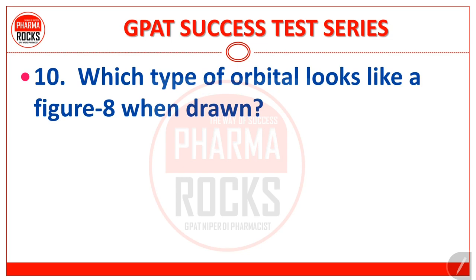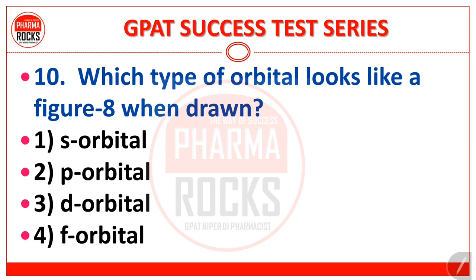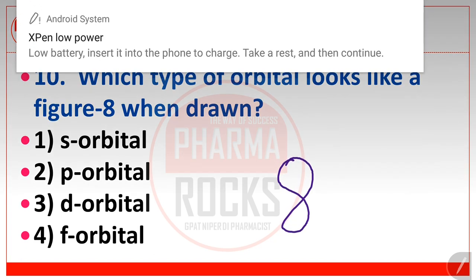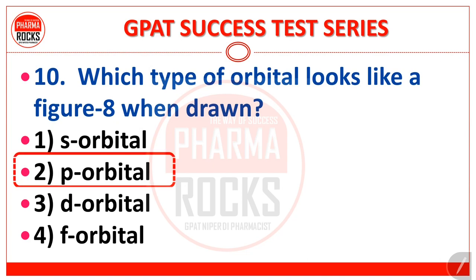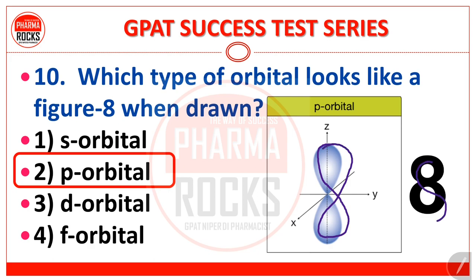Question number 10: which type of orbital looks like a figure 8 when drawn — s orbital, p orbital, d, or f? The correct answer is p orbital. As you can see here, the p orbital drawn looks exactly like the number 8. Which type of orbital looks like a figure 8 when drawn? It is the p orbital.